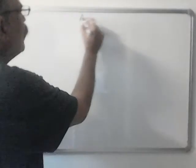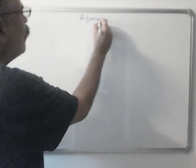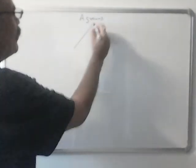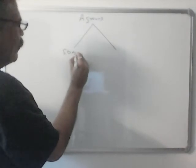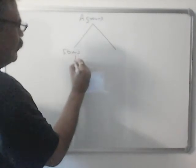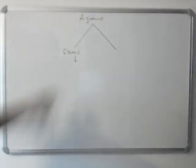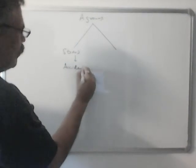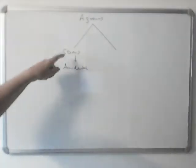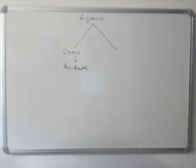Today we will do vessel agroundings. Agroundings of two types. One is stranding. This is accidental. This is the most common form of grounding.